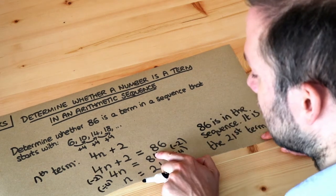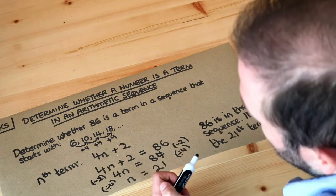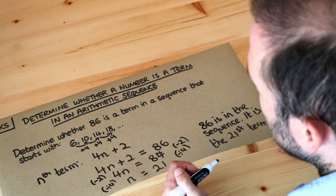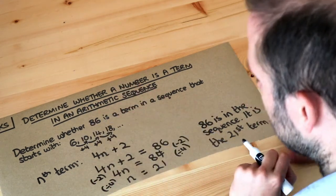If it was the case that the 84 didn't divide by 4 so we didn't get a whole number, then it can't be a term in the sequence, because we can't for example have the 6.5 term or the 7.3 term, can we? It has to be a whole number to be a position in the sequence.